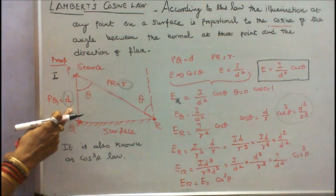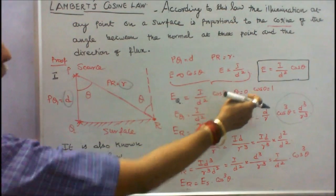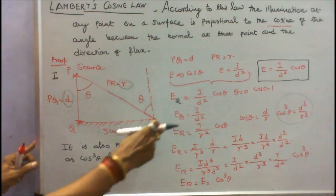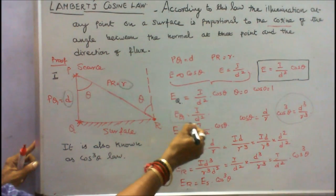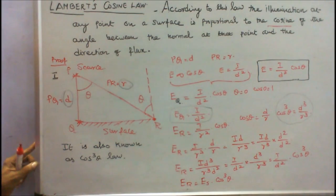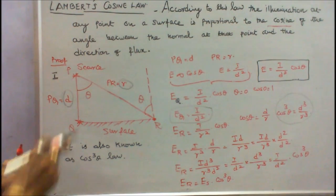Here theta value is 0. Therefore cos 0 is equal to 1. Here EQ is equal to I divided by D square. This is inverse square law because theta is equal to 0.